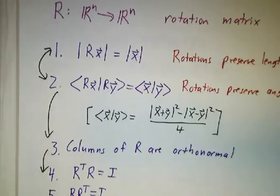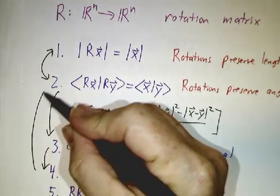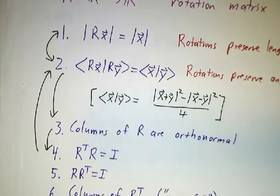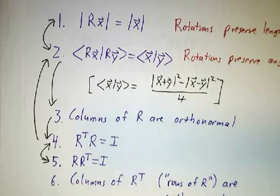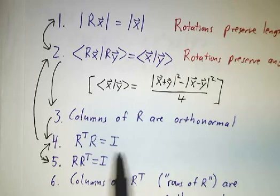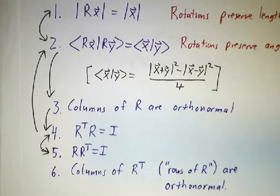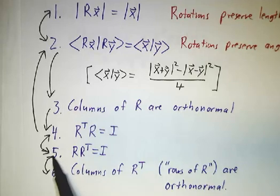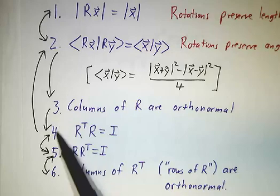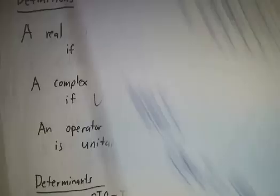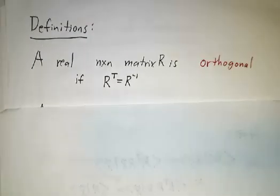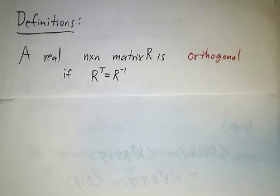So let's see what we've got: properties 1 and 2 are the same; 2 implies 3; 3 implies 4; 4 implies 2 — so 1, 2, 3, and 4 are all equivalent. Properties 4 and 5 are easily seen to be the same because both say that R transpose is R inverse. Going back and forth between 5 and 6 works the same way as between 3 and 4, just swapping the roles of R and R transpose. So we've shown that any one property implies all the other five. The definition: we call a real matrix orthogonal if it has one of those properties — and therefore all of these properties — meaning the transpose is the inverse.